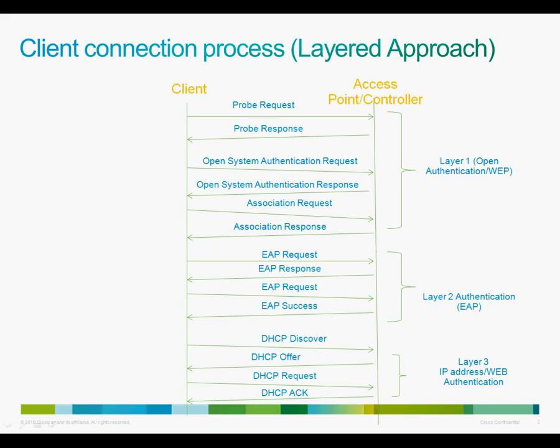Before we look at the debug commands, let's take a layered approach to the client connection process. The client initially sends a probe request to identify all the available SSIDs or wireless networks available over the air. Based on all the probe responses and the client configuration, the client will first go through the open authentication process which is part of the 802.11 protocol. Following this, the client will send an association request. Once the client has received a successful association response from the access point, it will move to a layer 2 process of authentication. At this point, the client is successfully authenticated at layer 1.